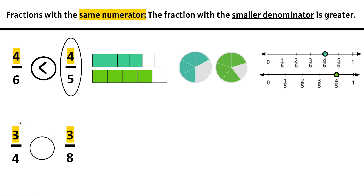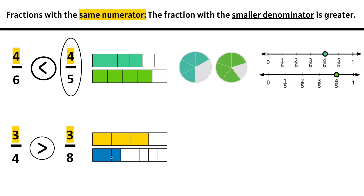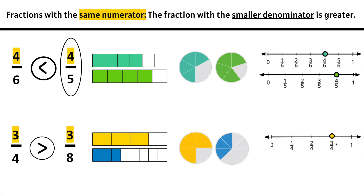3/4 compared to 3/8. We notice they have the same numerator. Remember, the fraction with the smaller denominator is greater. Is the 4 or the 8 smaller? The 4 is smaller, which means 3/4 is actually greater than 3/8. Let's model 3/4: 1, 2, 3, 4 equal parts, and we have 1, 2, 3/4 of the whole. This whole has 8 equal parts, and we have 3 of them — 1, 2, 3. Same numerator, different denominator. 8ths are smaller than 4ths, 4ths are greater than 8ths. We notice 3/4 is greater than 3/8. This number line is broken up into 4 equal parts, numerator is 3: 1, 2, 3/4. This number line goes from 0 to 1 whole broken up into 8 equal parts, same numerator of 3: 1/8, 2/8, 3/8. 3/4 is much bigger than 3/8.